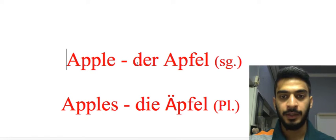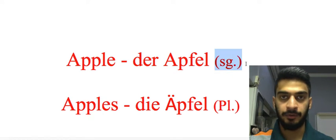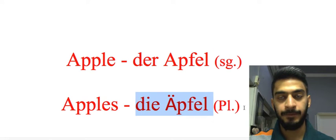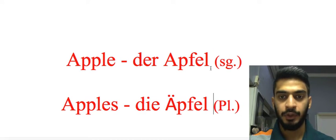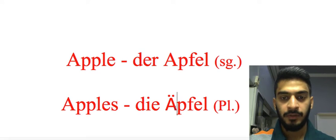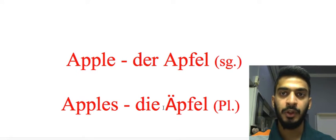Apples — 'die Äpfel' — is the plural form. So what's the difference between singular and plural? We have an umlaut in the plural form. It means we usually put two dots above the letter 'a'. So that's the difference.